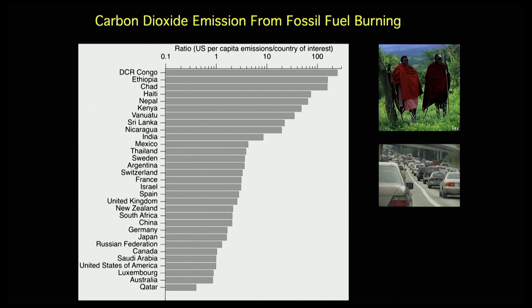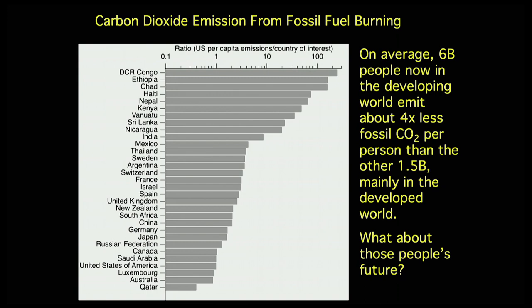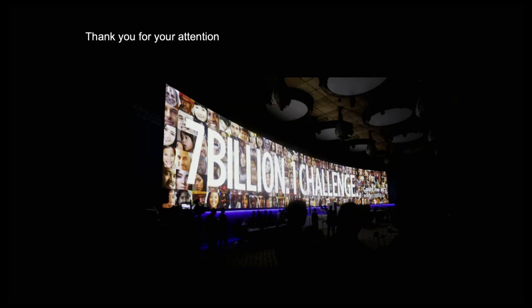People who live in wealthy nations just don't consume carbon the way people in developing nations do. If you add it up over the whole world, we have six billion people in the developing world who emit four times less fossil carbon per person than the other one and a half billion in the developed world. If those countries develop using fossil energy the way we did, the planet is going to be in very deep trouble. It really tells you how essential it is that we act quickly, partly because development is so important—it's what brings health and well-being to the developing world, and it cannot be slowed down. Thank you for your attention.